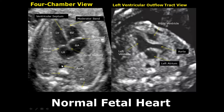When we locate the aorta, the nearest chamber will be the left atrium. In the left ventricular outflow tract view, we see a proper appearance of the left ventricle and the aorta. Here is the right ventricle, the posterior-most left atrium, and part of the descending aorta is also seen.